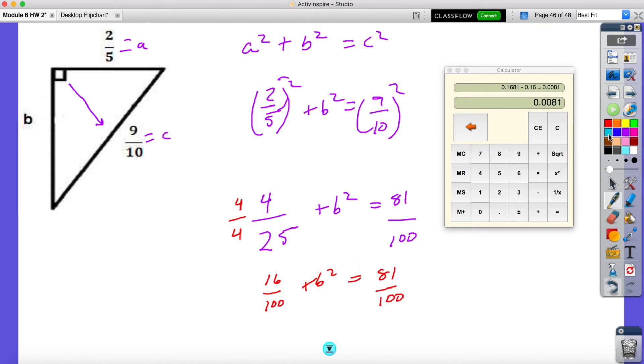And what I'm going to do is I'm going to subtract 16 hundredths on both sides. And if I do 81 minus 16, I'm going to get 65 over 100 is equal to B squared.